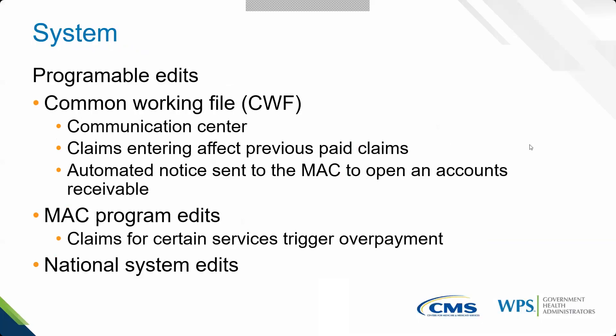The system can also identify overpayments through built-in programmable edits. As systems communicate back and forth, it may determine a claim should not have been paid. The key system to be aware of is the Common Working File — the communication hub between all Medicare systems, including Part C and Part D. When something comes in indicating a claim affects another claim, the Common Working File can automatically open an accounts receivable and send you a letter explaining why, without anyone manually looking at it.